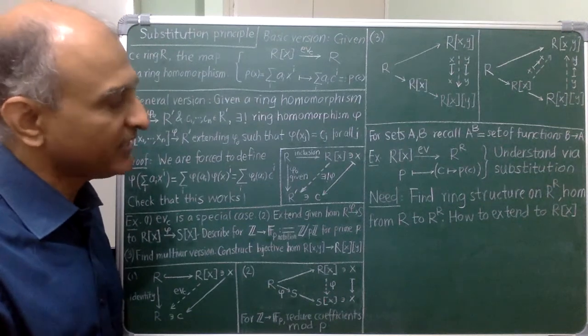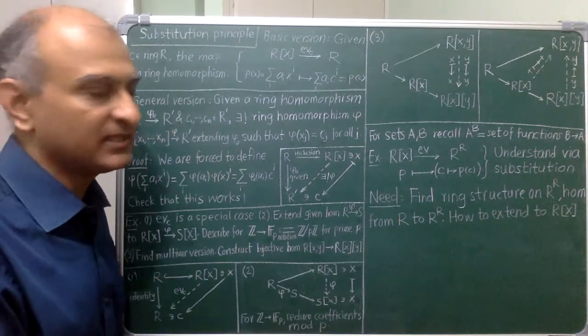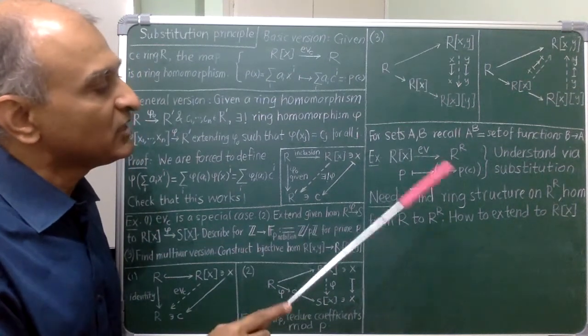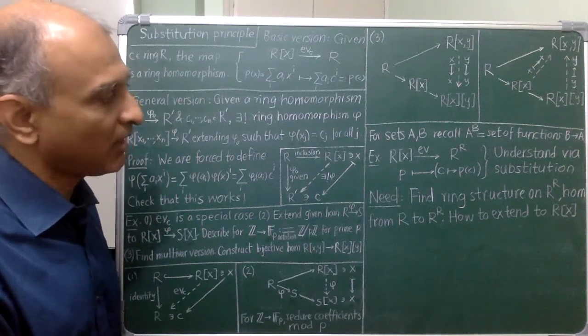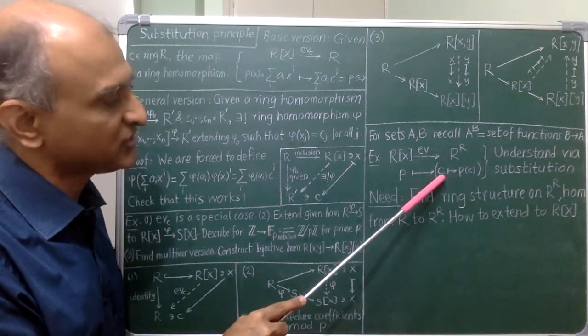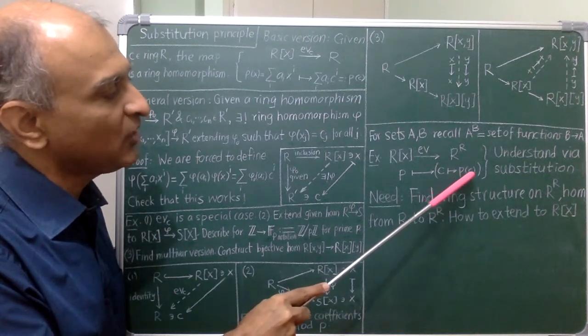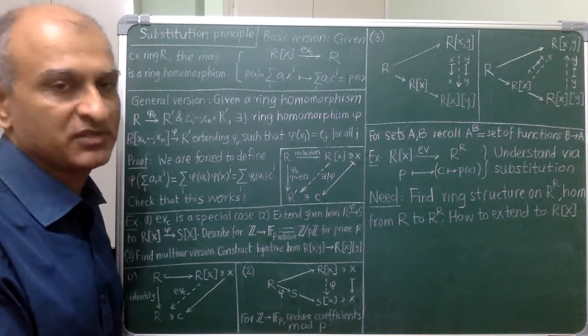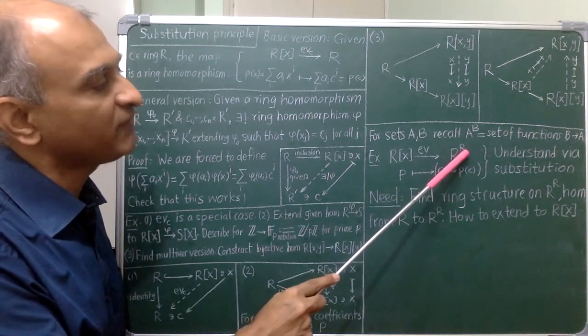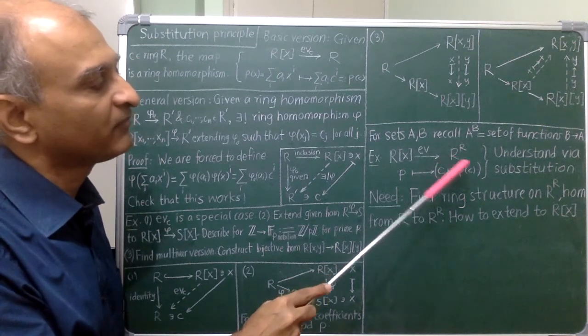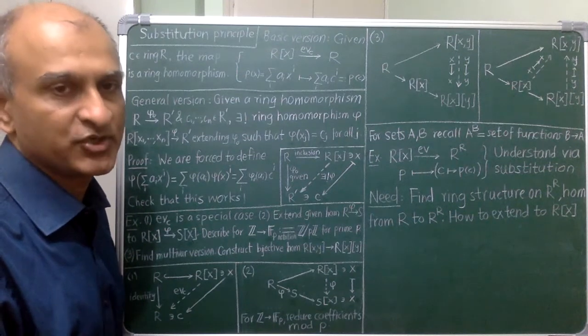In the example, I want to see the connection between polynomials as symbolic objects and the functions that they define. Given a polynomial in a single variable, it defines a function on R by taking an input C and the output is the evaluation of P on C. So, I call this the evaluation function. The target of this function is the set of all functions from R to R and I would like to understand this situation as an example of the substitution principle.